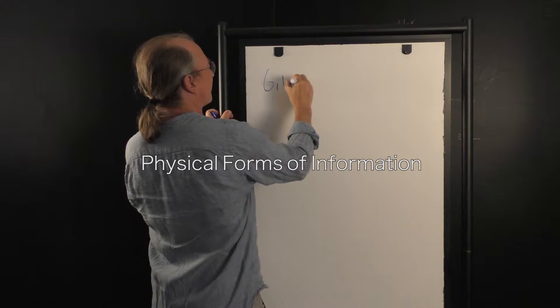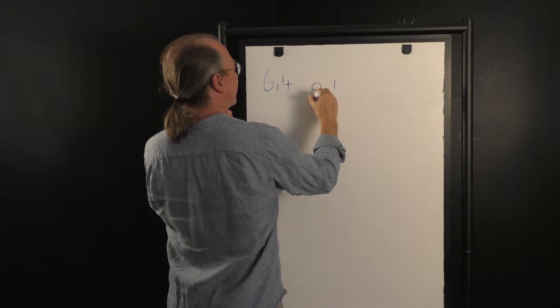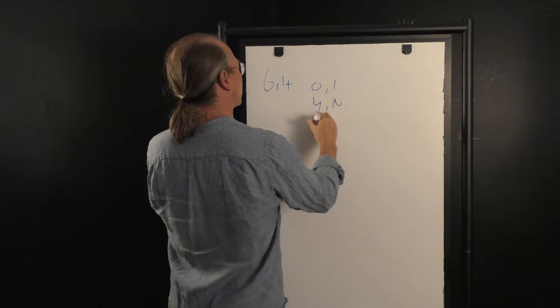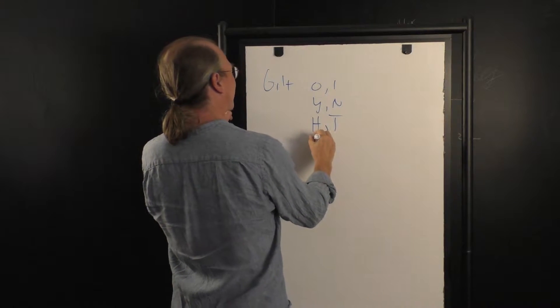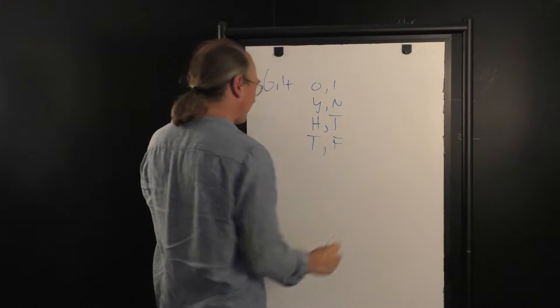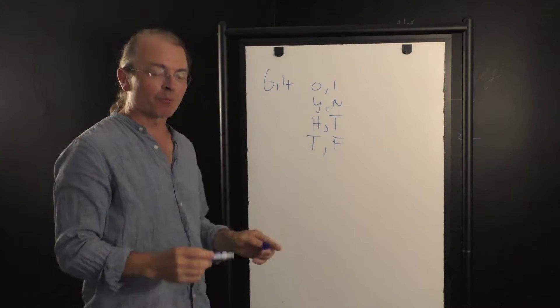A bit: zero, one, yes, no, heads or tails, true or false - the distinction between two different possibilities.